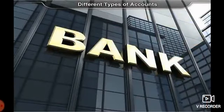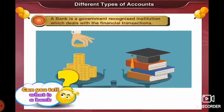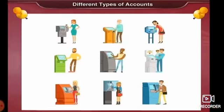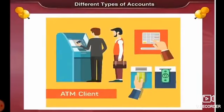You can see a word on the screen — it is 'bank'. A bank is a government-recognized institution which deals with financial transactions, that is, it carries out transactions of money. A bank makes it easier to plan the use of money, helping us with financial planning. We can either deposit money, that is save, or withdraw money from it. Withdraw means to remove.